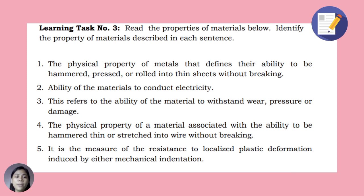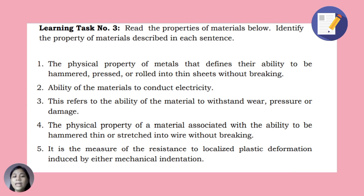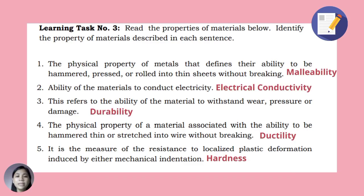For Learning Task 3, read the properties of materials below and identify the property described in each sentence. Number 1: the physical property of metals that defines their ability to be hammered, pressed, or rolled into thin sheets without breaking. Number 2: ability of materials to conduct electricity. Number 3: the ability of materials to withstand wear, pressure, or damage. Number 4: the physical property of a material associated with the ability to be hammered thin or stretched into wire without breaking. Number 5: it is the measure of resistance to localized plastic deformation induced by mechanical identification. Correct answers: 1 - malleability, 2 - electrical conductivity, 3 - durability, 4 - ductility, 5 - hardness.